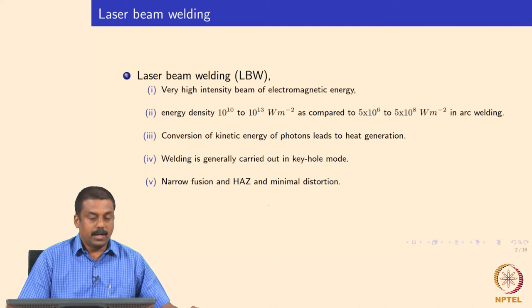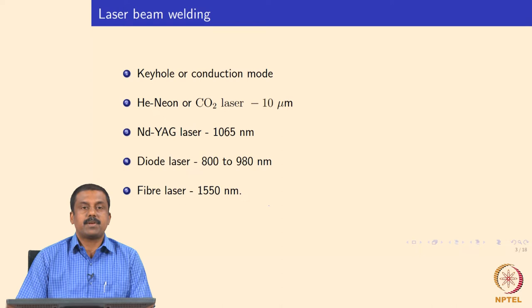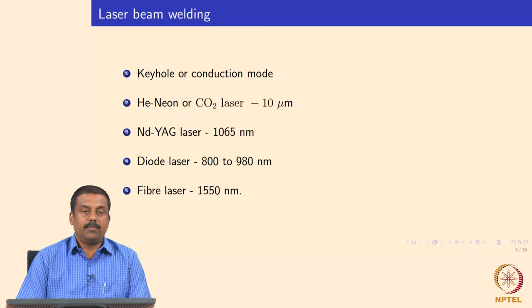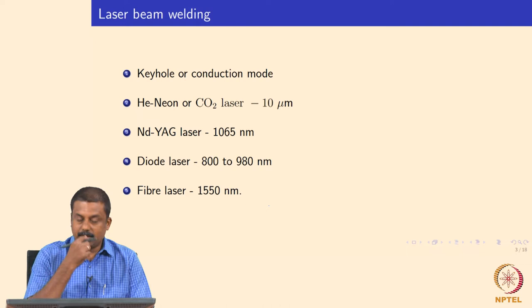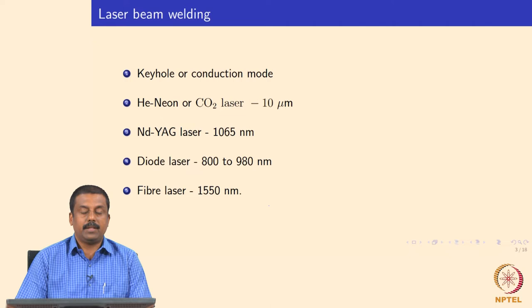Looking at the various lasers that are commercially available: based on intensity and focal point, we can either do welding in keyhole mode, full penetration mode, or conduction mode. Some applications of lasers include surface hardening treatment or depositing powder using a laser source. In those cases, we limit damage to the microstructure of the substrate to a minimal level, operating the laser beam in conduction mode. You can also do a full penetration weld, which we call keyhole welding.